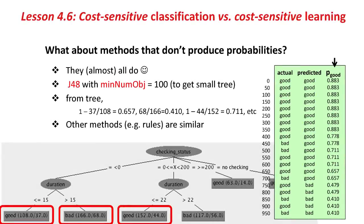Well, that's what you do for Naive Bayes. But what about methods that don't produce probabilities? Well, they almost all do produce probabilities. Let's look at J48. Imagine J48 with min-num-obj set to 100. I've done this to force a small tree. I won't do it for you, but I will get the tree shown here.